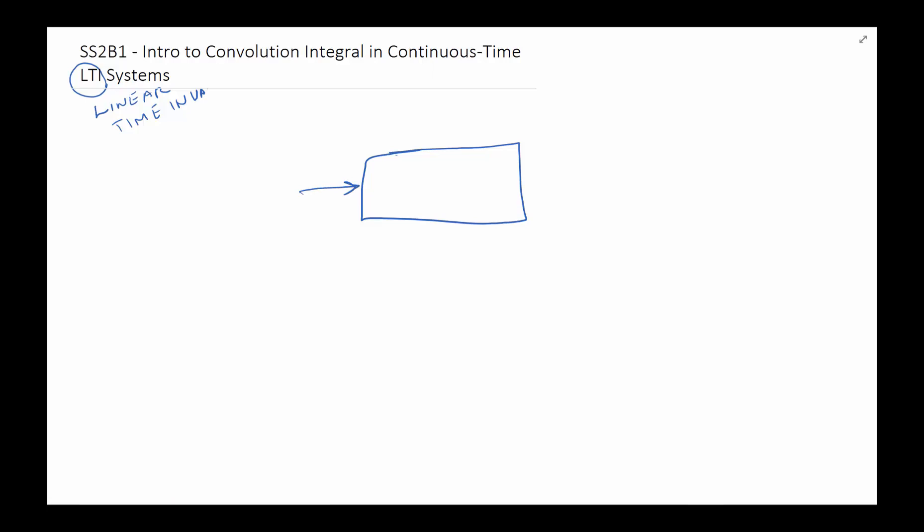We write this as an impulse function from minus infinity to infinity: delta(t-tau), where this is delta(t) minus tau. If you plot this signal, it looks something like this: it's one, and this is t, so it's a straight line across the whole thing with magnitude one.